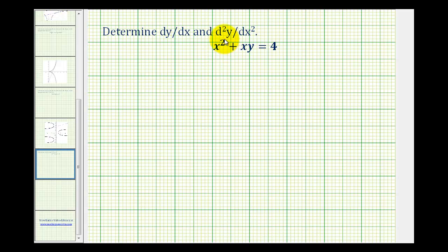So we'll determine the derivative of both sides with respect to x. So from this we can determine the first derivative. Differentiating, the derivative of x squared with respect to x would be 2x.